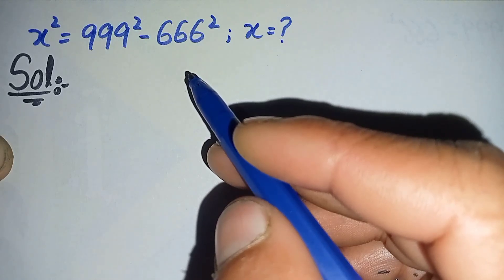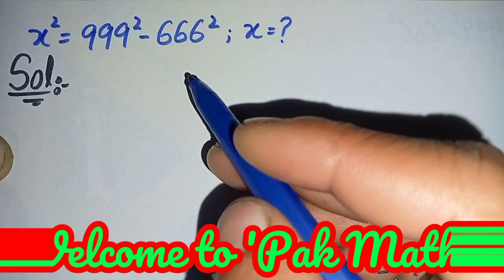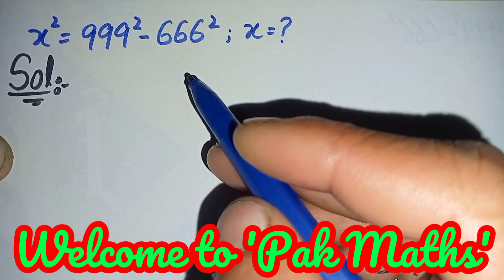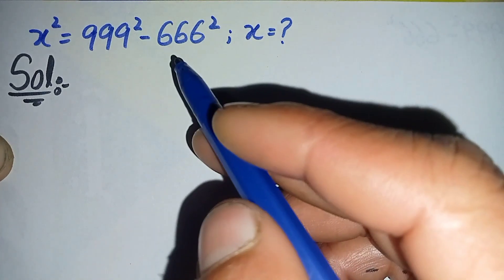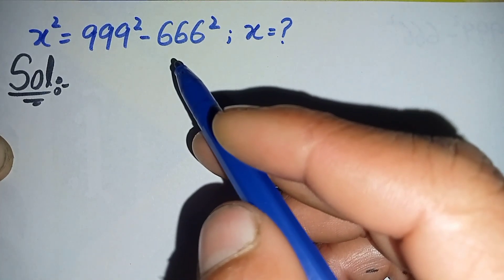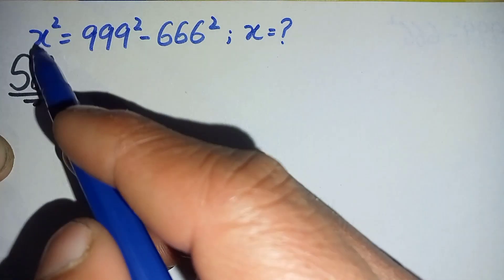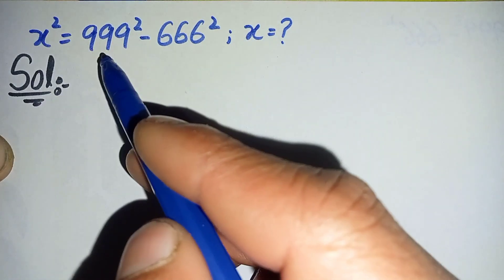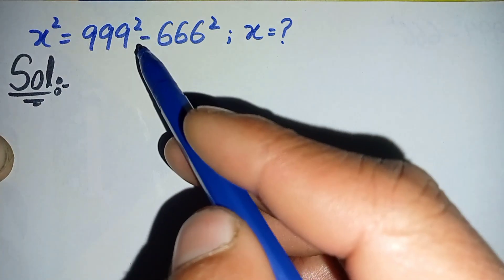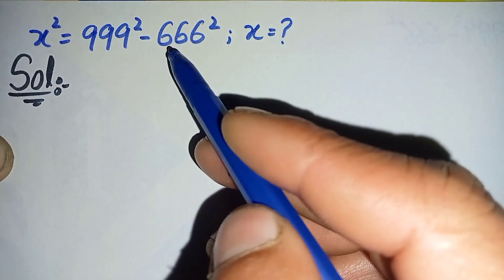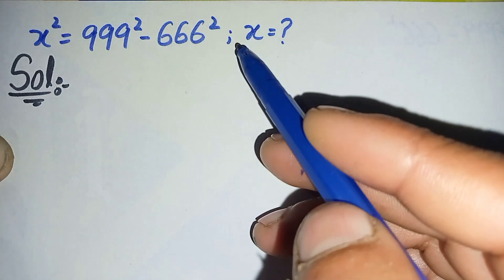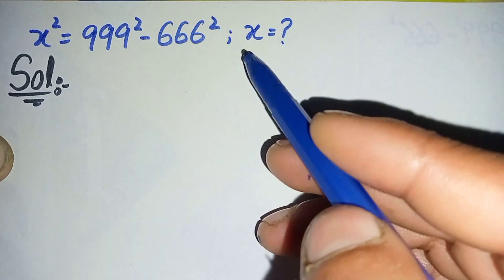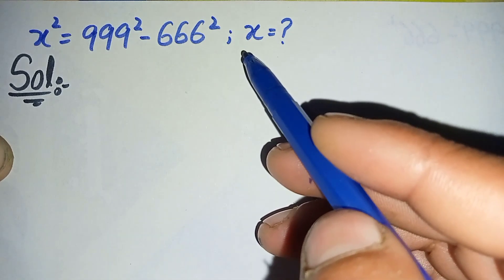Hello everyone. Welcome back to Parkmance. In this video I am going to solve this nice squaring math problem: x squared is equal to 999 squared minus 666 squared. So here we will try to find the value of x.